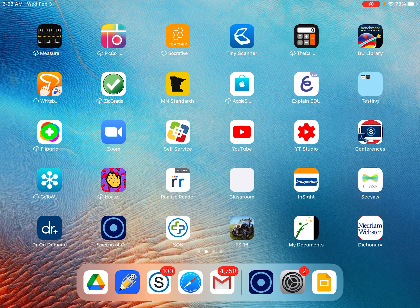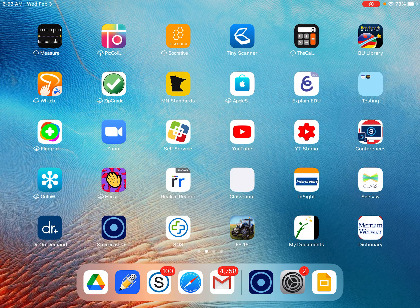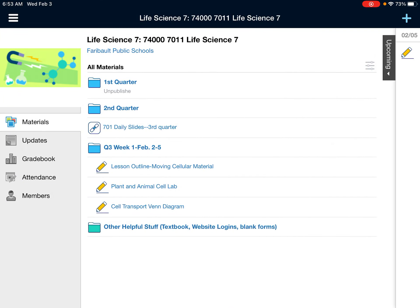Hey seventh graders, today you're going to be working on the cell transport Venn diagram. If you're looking in Schoology, this is going to be in the week one folder and it's just called cell transport Venn diagram.